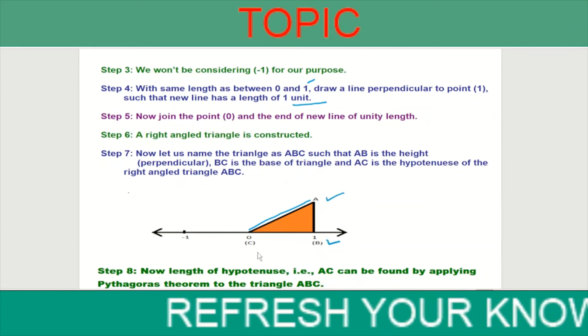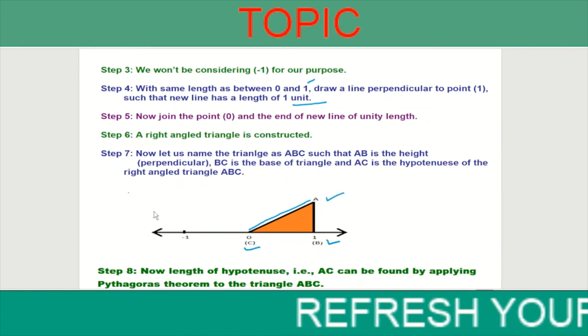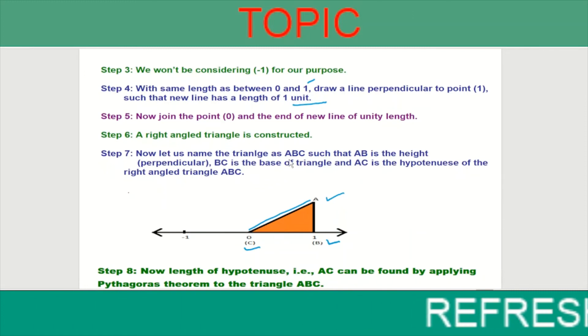Here A, B, C. Triangle ABC is such that AB is the height, that is perpendicular, as we have discussed.